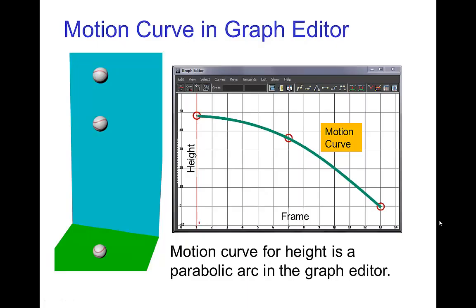Another instance where we find a parabolic arc is when we have an object that is falling or rising and falling, then the motion curve in the graph editor is also a parabolic arc.